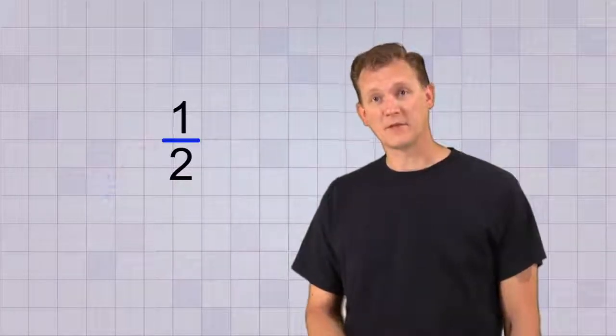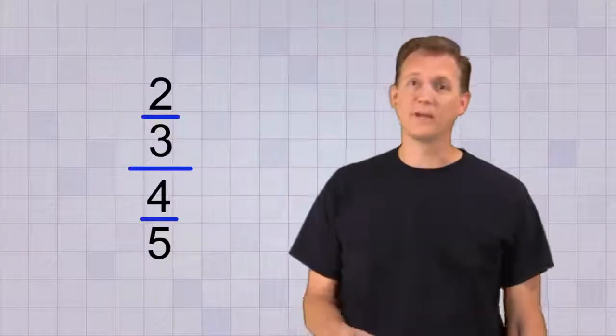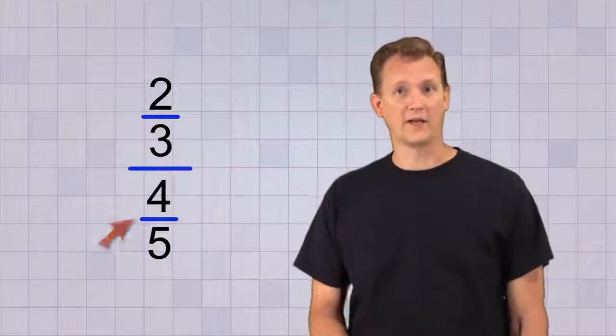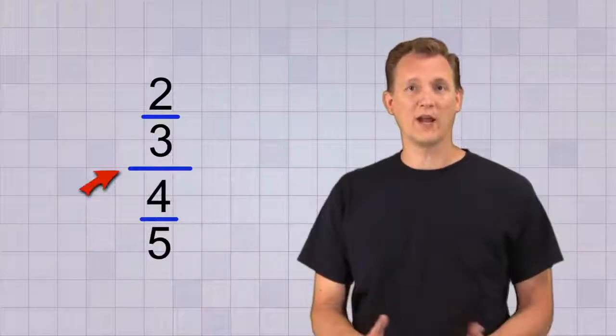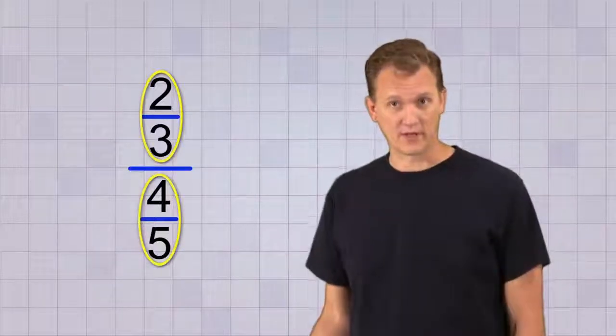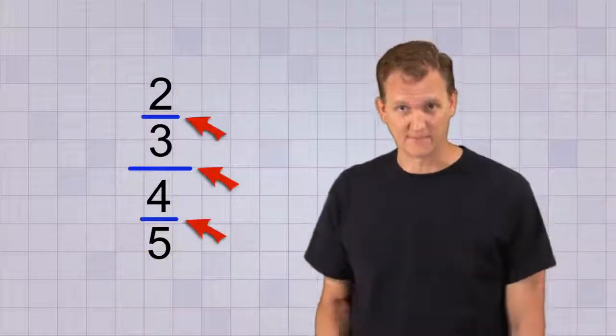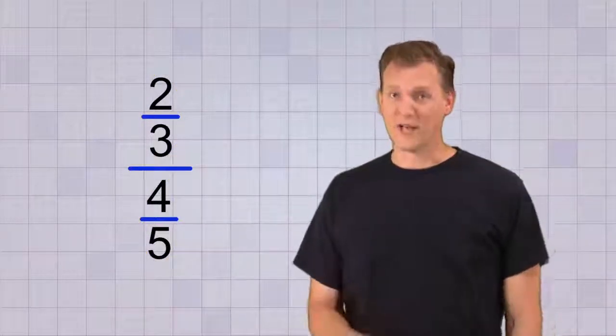Well, that means you'll sometimes see fraction division problems written like this. This shows the top fraction, 2 over 3, being divided by the bottom fraction, 4 over 5. It's really just that we have a fraction made up from other fractions. The top number is a fraction and the bottom number is a fraction. It just looks a little confusing because we have all these fraction lines here. But we can make it look a lot better.